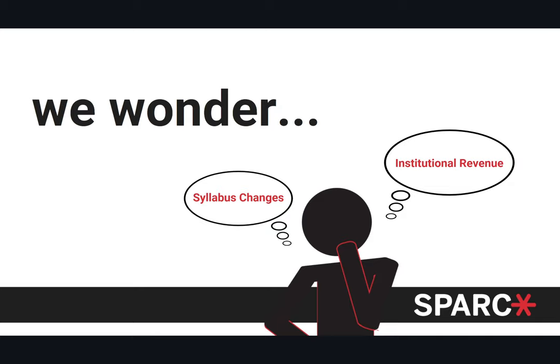There are also open questions we wonder about in publisher contracts, such as syllabus changes. We've seen instances where syllabi before and after inclusive access contracts show a 15% shift toward purchasing these books — which come with software that becomes homework or quizzes. We also question whether institutions are making revenue in this process, as the contracts are not transparent about what institutions earn, and that should be made clear. We plan to look into both of these as we continue our research.